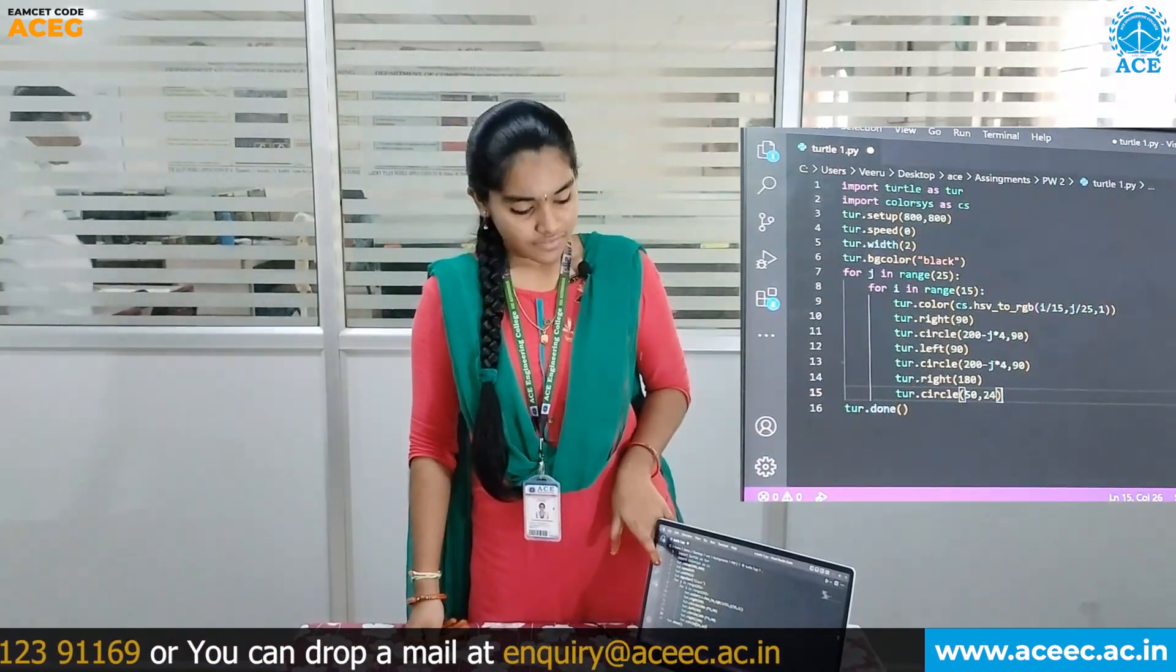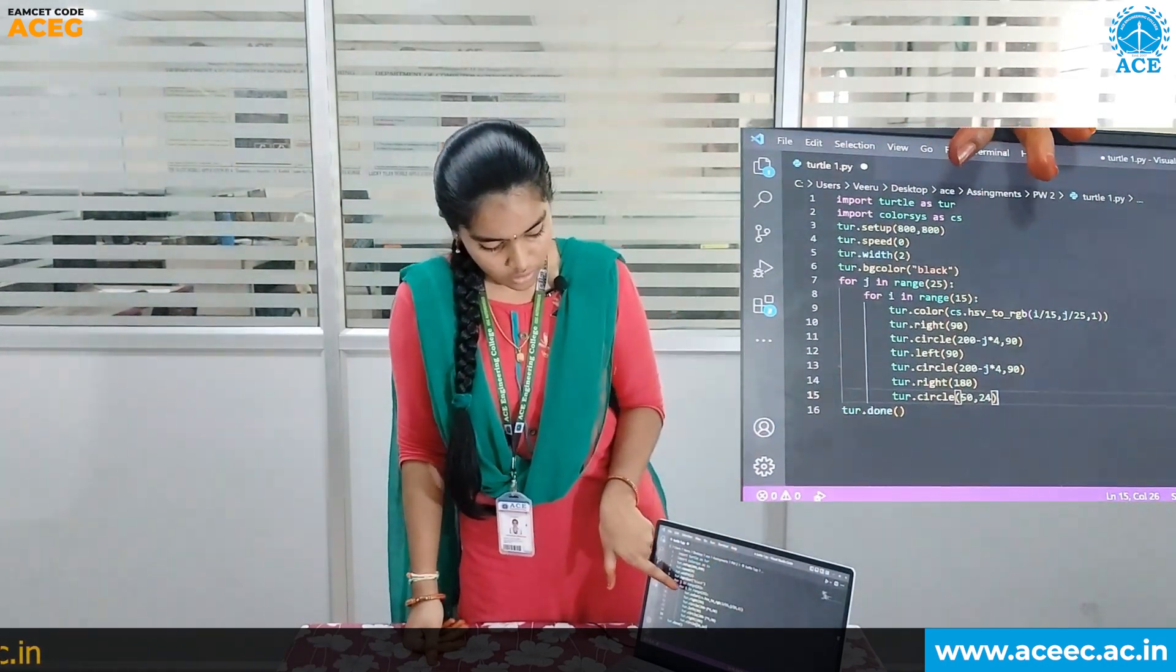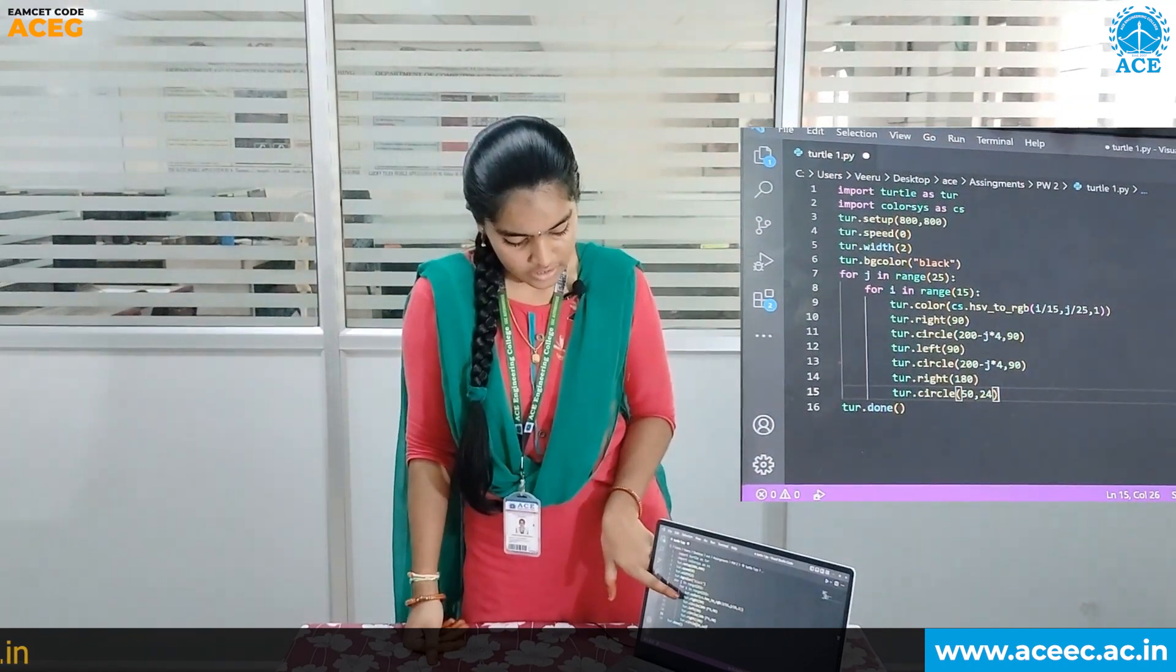For iteration of circles, for outer for loop we used 25 times and for inner for loop we used 15 times. In inner for loop we used Color, Right, and Circle, and for outer for loop we used Left, Color, and Right.